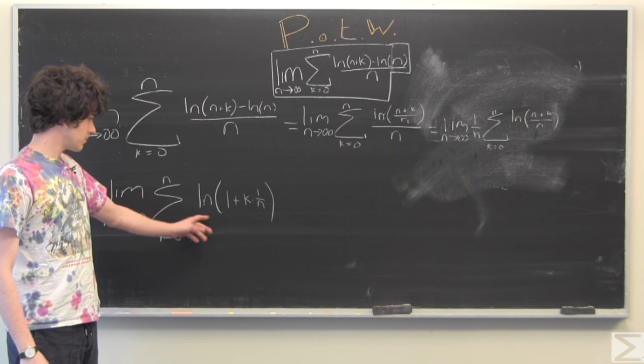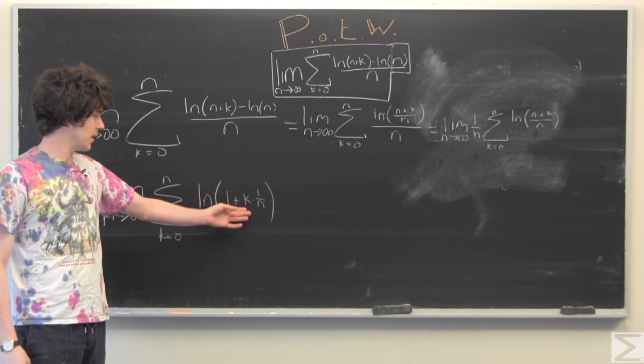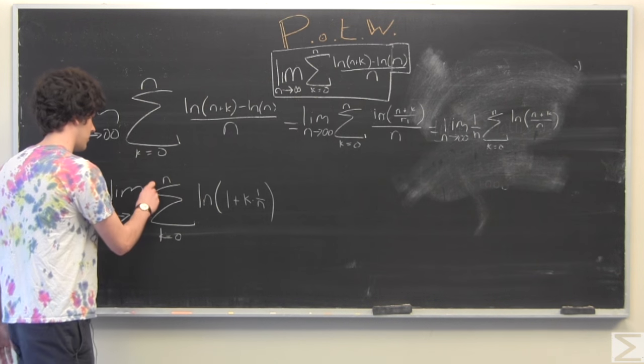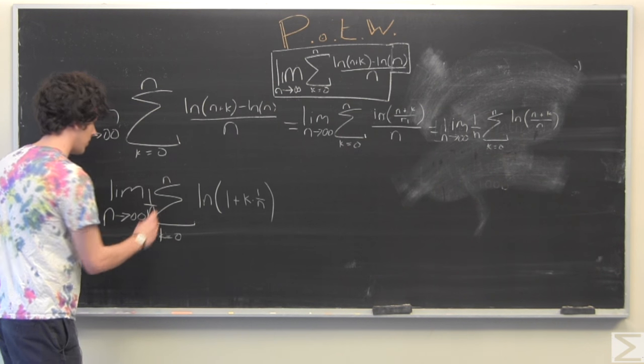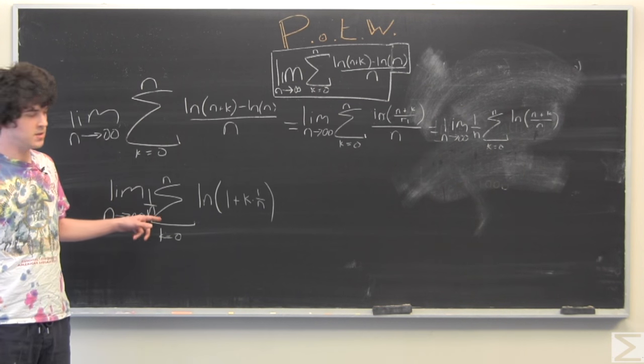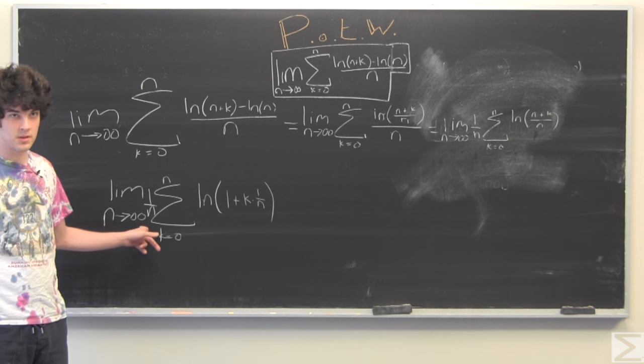So now we have this, k times 1 over n, 1s, and another 1 over n. So this 1 over n should, because n of course is going to infinity, should represent some very small quantity that we're adding to 1.